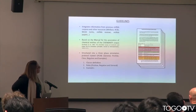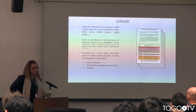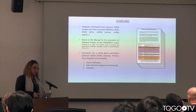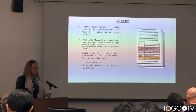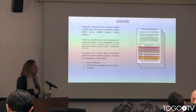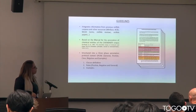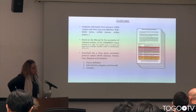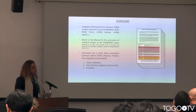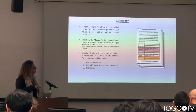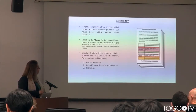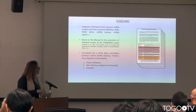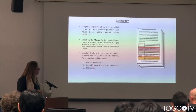The guidelines integrate different information from different databases, from reviewers, from PubMed and NCBI, and are based on the manual for the annotation of chemical entities. They are structured into a three-phase annotation protocol, which basically means you have to define the class, then you follow some rules — positive, negative, and general — to do the correct labeling.